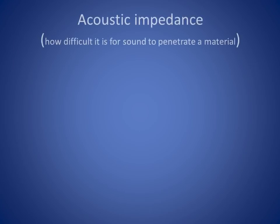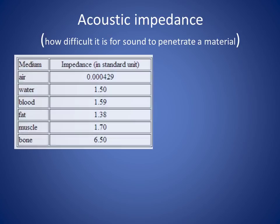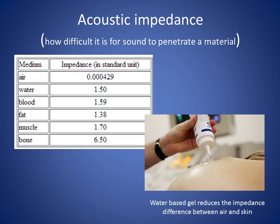The second key concept in understanding ultrasound is acoustic impedance, which describes the ability of sound to penetrate a material. Acoustic impedance is related to the density of the material and the speed of sound in the material. The exact fraction of incident sound which is transmitted or reflected depends on how different the two materials on each side of a boundary are. The greater the difference in impedance, the more sound will be reflected rather than transmitted. Air and water have very different impedances, so a beam of ultrasound hitting a water surface is almost entirely reflected away, and only a small amount enters the water. Because of the impedance difference between air and skin, a water-based gel is used to act as a coupling medium and help match the impedances.